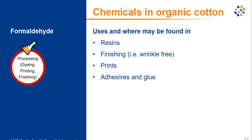During textile processing in any form — fiber, fabric, or finished garment — examples of hazardous substances include formaldehyde. It can be used in resins, as a finishing agent to provide wrinkle-free or easy-iron properties, as a fixing agent for prints, or as part of adhesive and glue formulas.